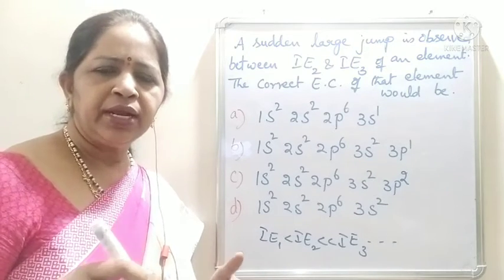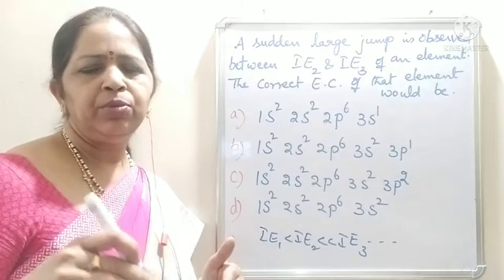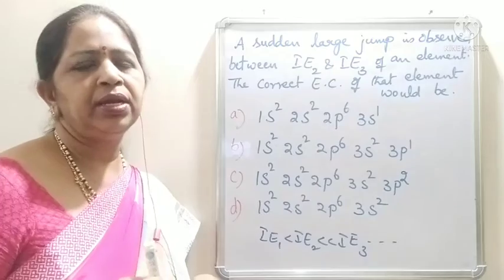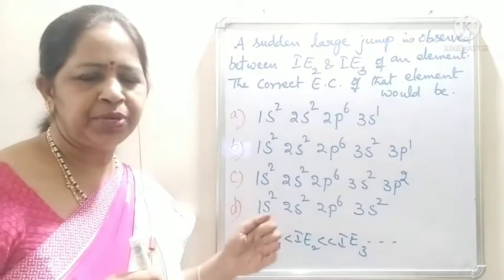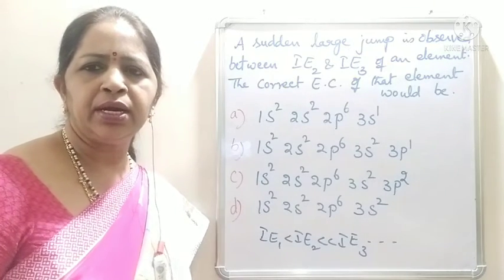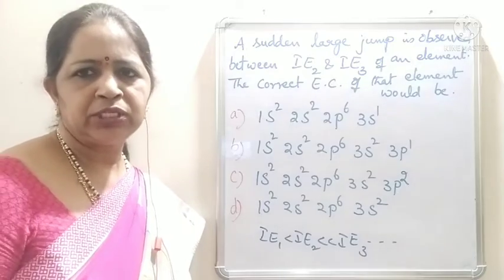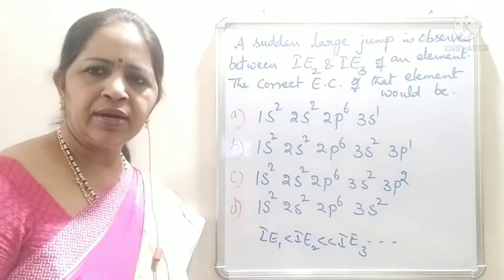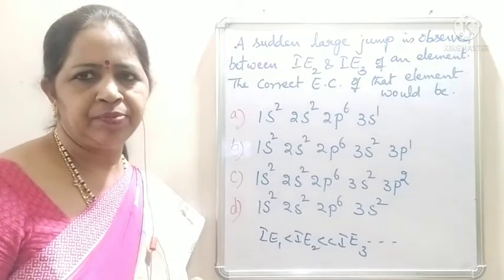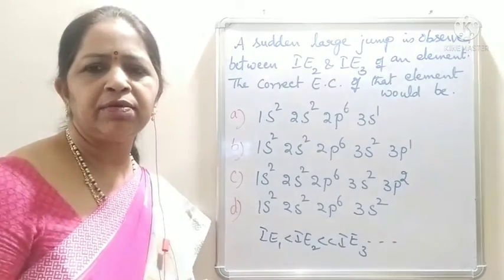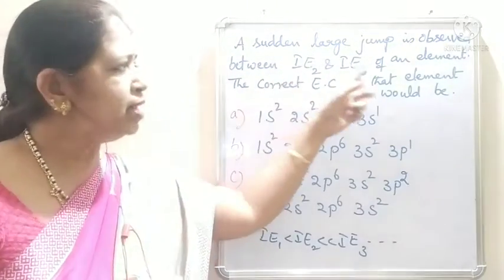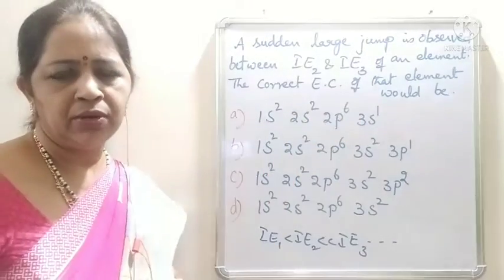That means two electrons can be removed easily, but for the removal of the third electron, a large amount of energy is required. A large jump is shown from second to third ionization energy. So we can say that there are two electrons in the outermost orbit and the third electron is present inside — inside the valence shell. To remove that third electron, a large amount of energy is required. So this element has two electrons in the outermost orbit.